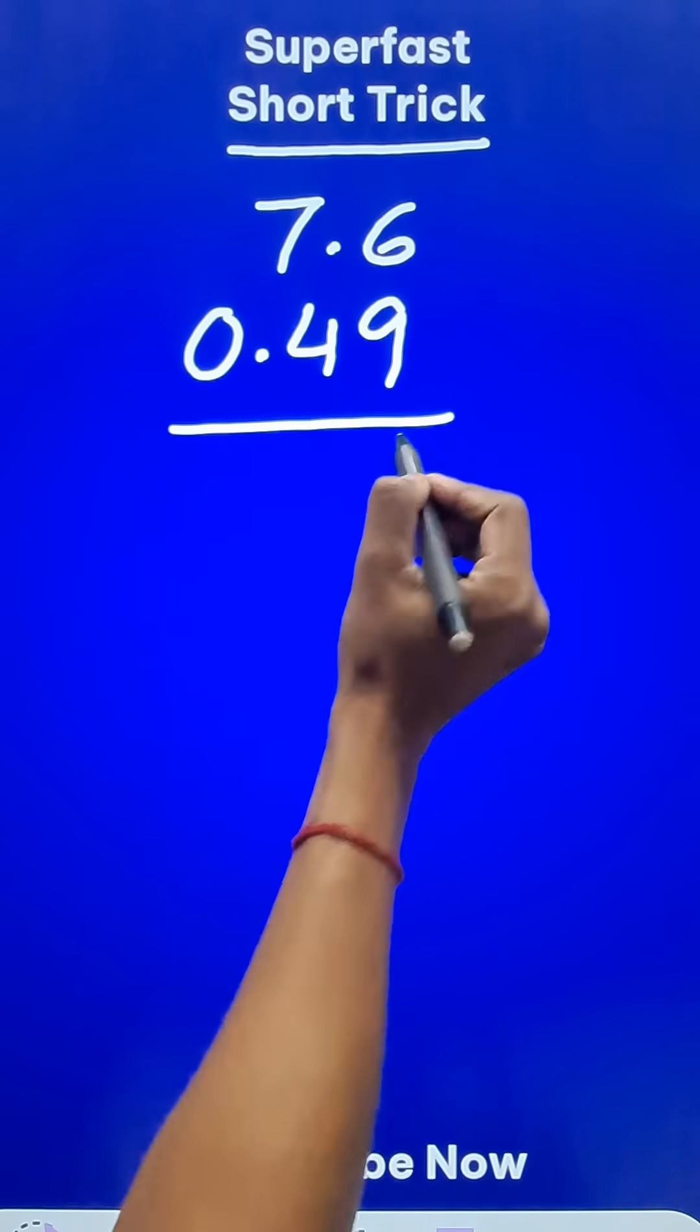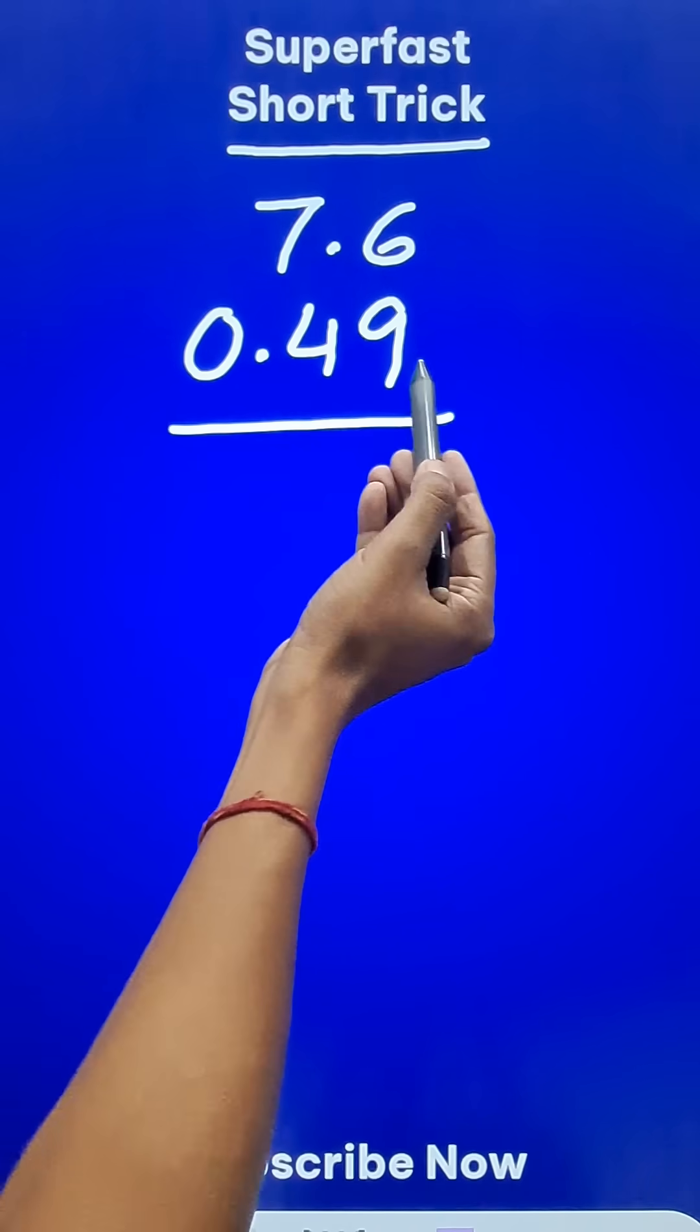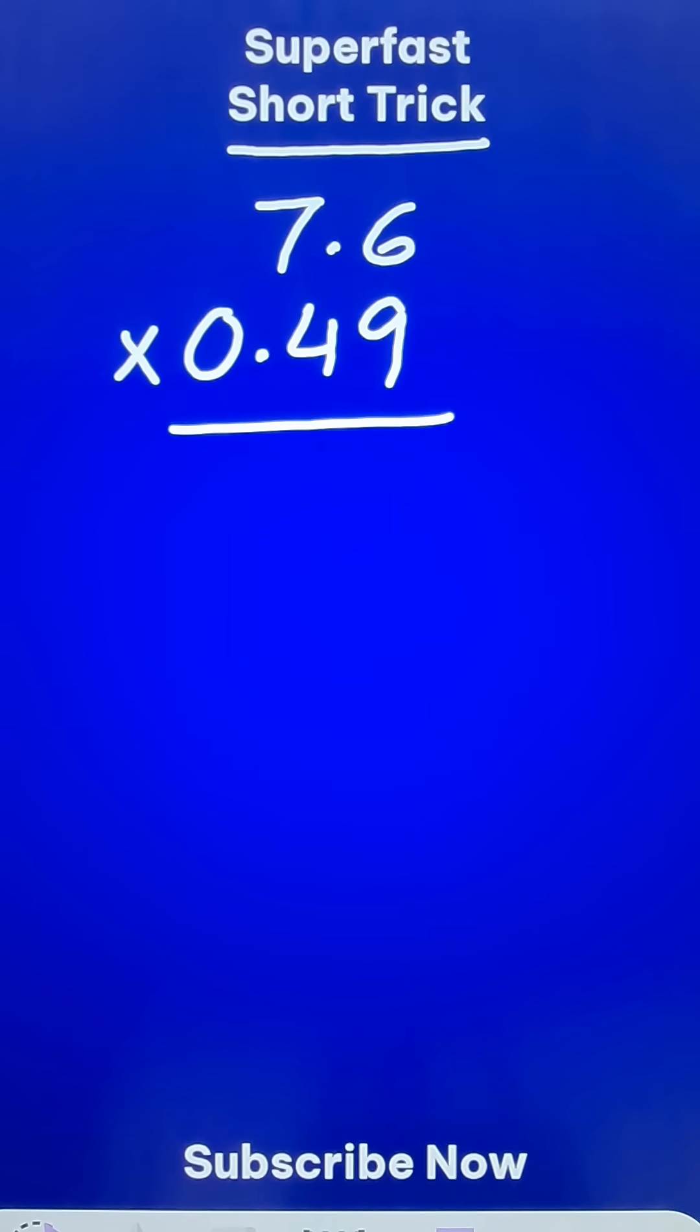Now practically these two numbers, if you neglect the decimal, it is 76 times 49, right? So let's use the vertically and crosswise method.